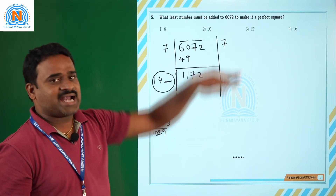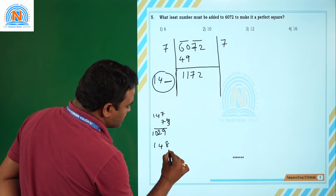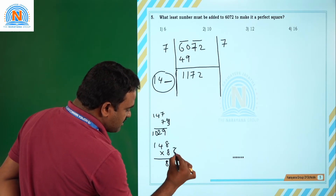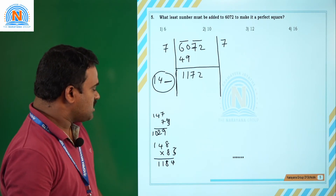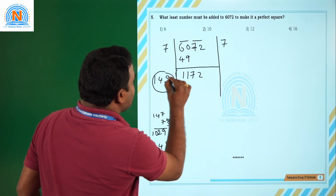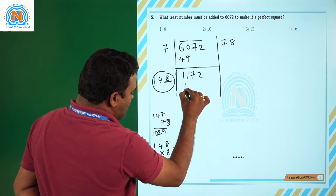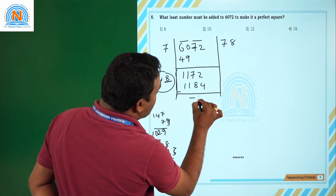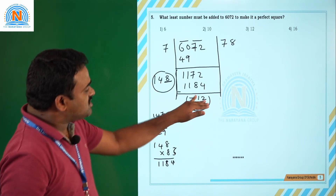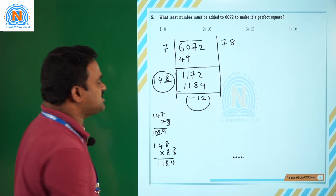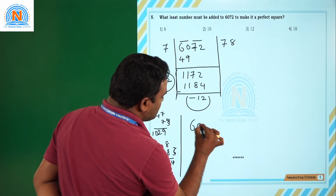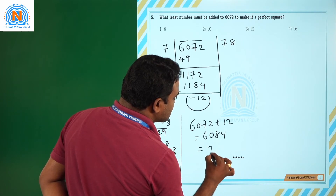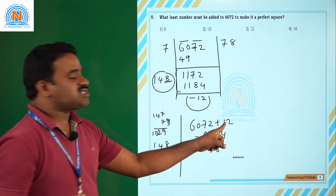Checking 148 × 8 = 1184: since 1184 > 1172, we cannot subtract. The remainder after taking 147 × 7 shows that 12 must be added to 6072. Adding 12 gives 6084, which is 78². So 12 should be added to make it a perfect square.